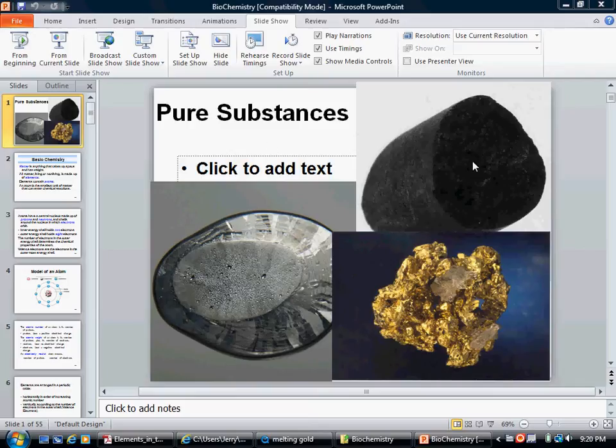This first picture that I have here is a picture of carbon, lead, and gold. And these pictures are representatives of pure substances. So this picture shows nothing but carbon atoms, and this picture shows nothing but lead atoms, and this picture shows nothing but gold. We call these pure substances.